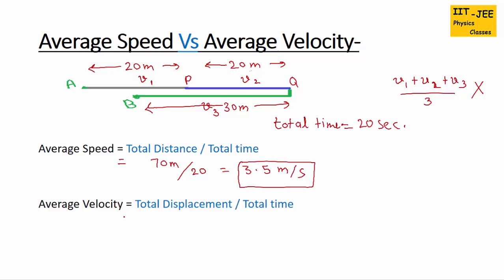Now let's find average velocity. Its formula is total displacement over total time. Displacement is the length between the starting point A and the ending point B. The forward distance is 40 meters and the return is 30 meters, so the net displacement is 40 − 30 = 10 meters. Therefore, average velocity = 10 meters ÷ 20 seconds = 0.5 meters per second.